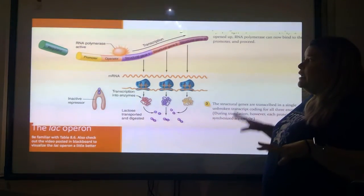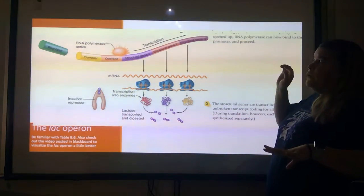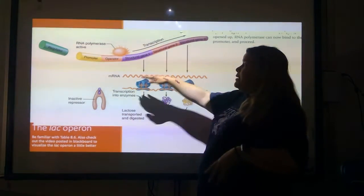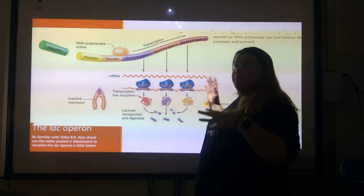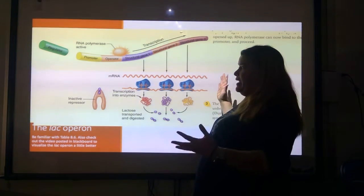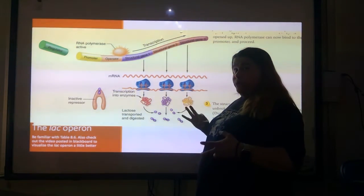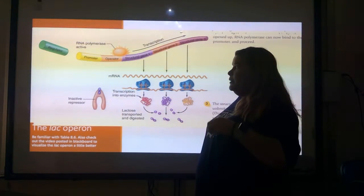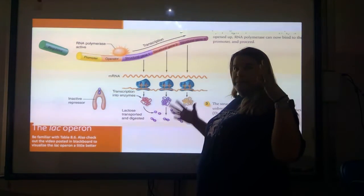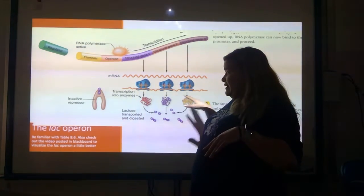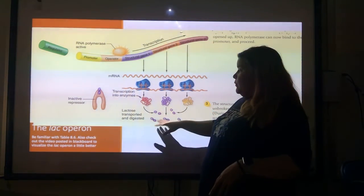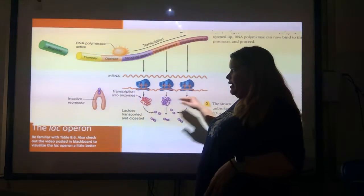Something interesting about how this works: as RNA polymerase reads the operon, it makes one really long piece of RNA covering three separate genes. Although this large RNA is made, it actually produces three separate protein molecules — three separate translations into enzymes — that stay separated because it isn't one big protein. These three proteins are used to metabolize or break down lactose.